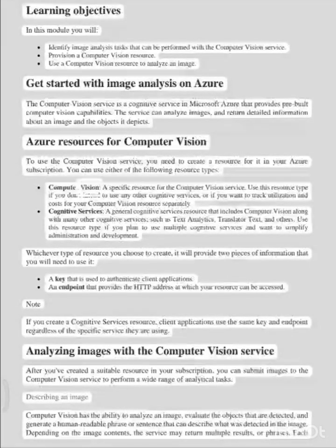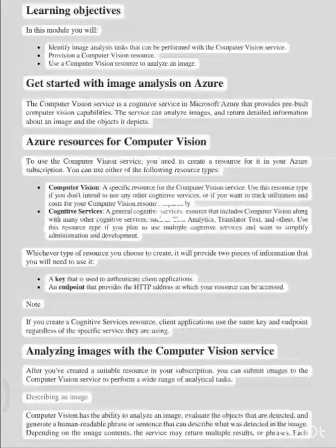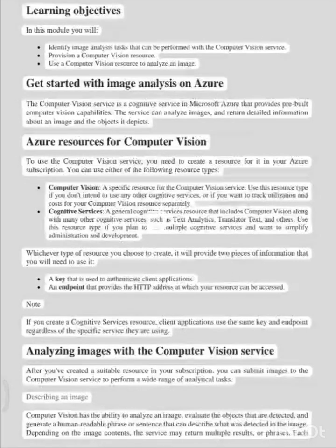Computer Vision: a specific resource for the computer vision service. Use this resource type if you don't intend to use any other cognitive services, or if you want to track utilization and costs for your computer vision resource separately. Cognitive Services: a general cognitive services resource that includes computer vision along with many other cognitive services, such as text analytics, translator text, and others.